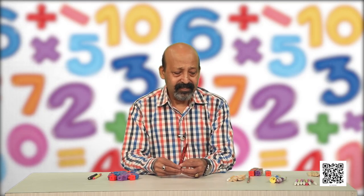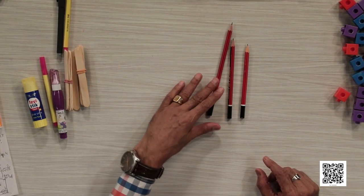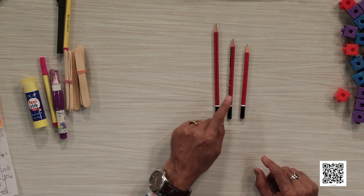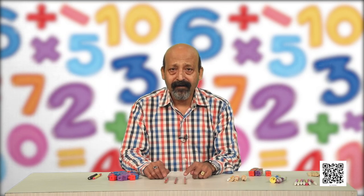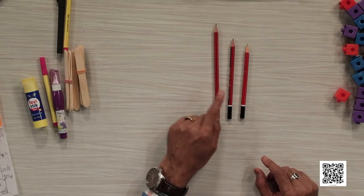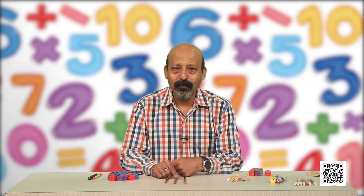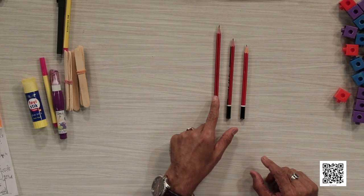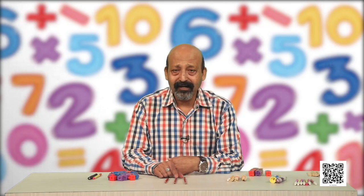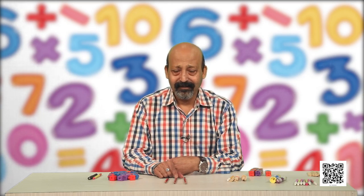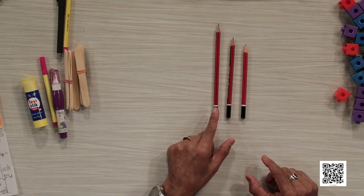Now, if we are having more than two objects, what do we say? I have these three pencils with me. Out of these three, this pencil is the longest one and this pencil is the shortest one. So we use longest and shortest. The middle one — it is shorter than the longest pencil and longer than the shortest pencil, so the middle one is longer as well as shorter.